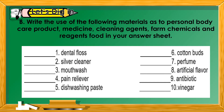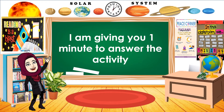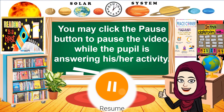After answering the first activity in let's dig in, let's proceed to activity B. Write the use of the following materials as personal body care products, medicine, cleaning agents, farm chemicals, or reagents food in your answer sheet. For example, number one — dental floss: you need to answer whether dental floss is a personal body care product, medicine, cleaning agent, farm chemical, or reagents food. Kindly write your answer in the space provided. Are you ready? I'm giving you one minute to answer the activity.